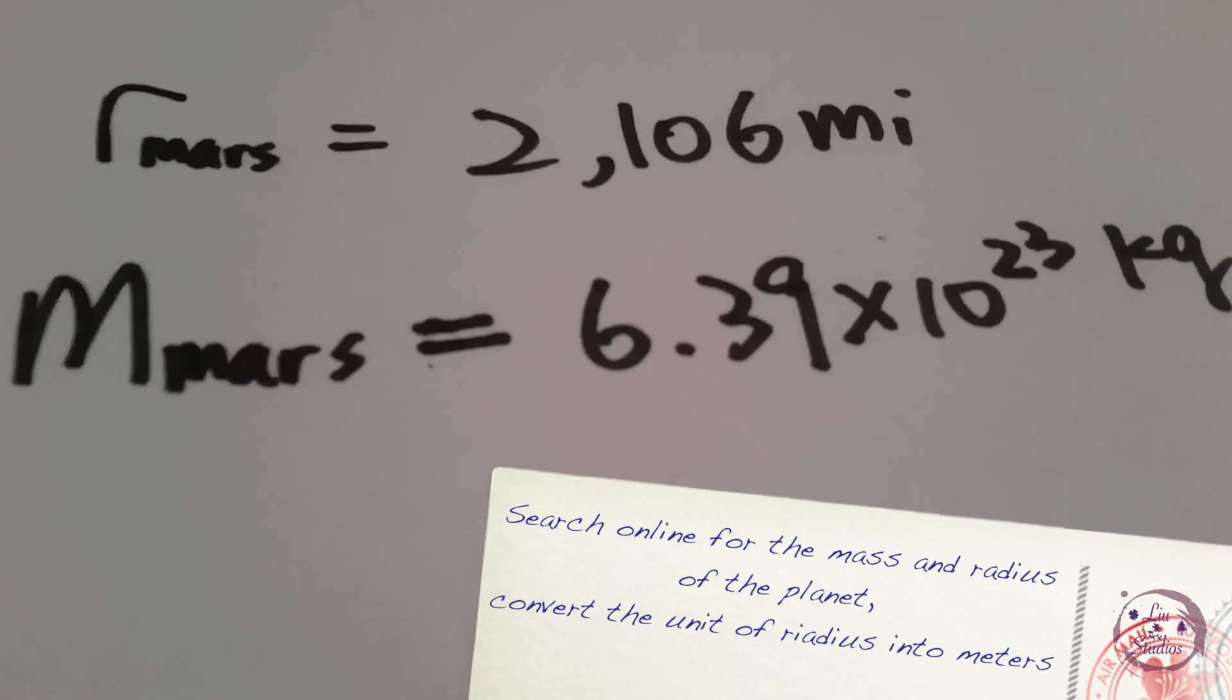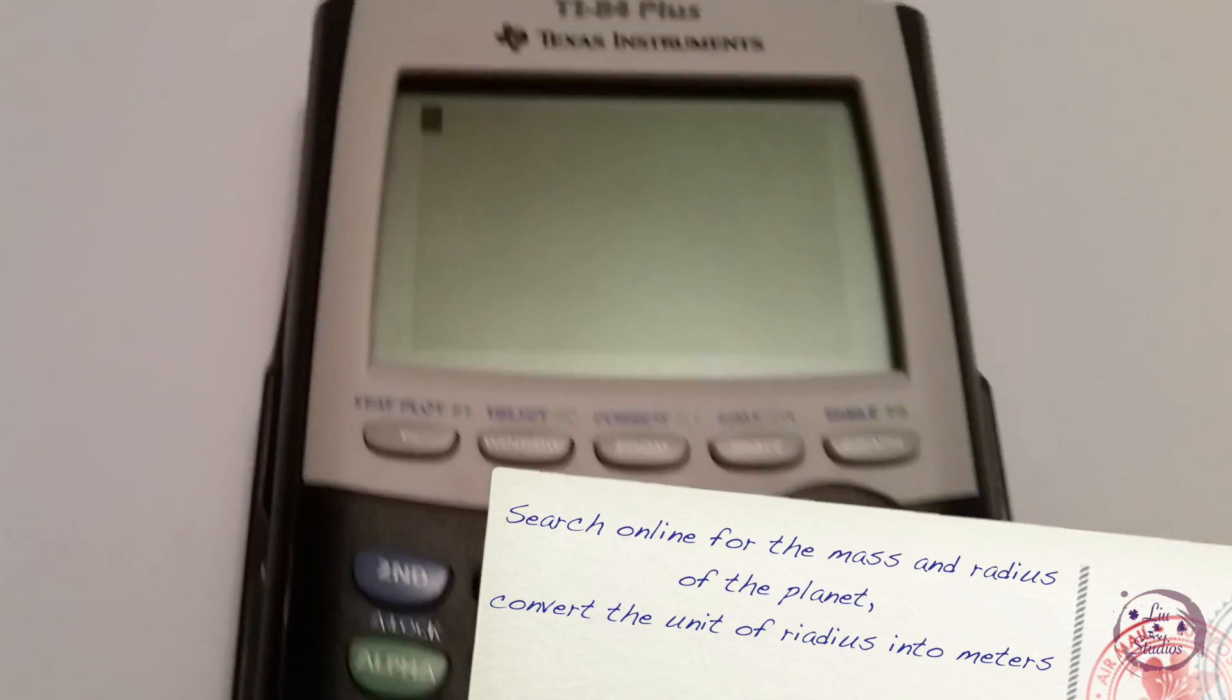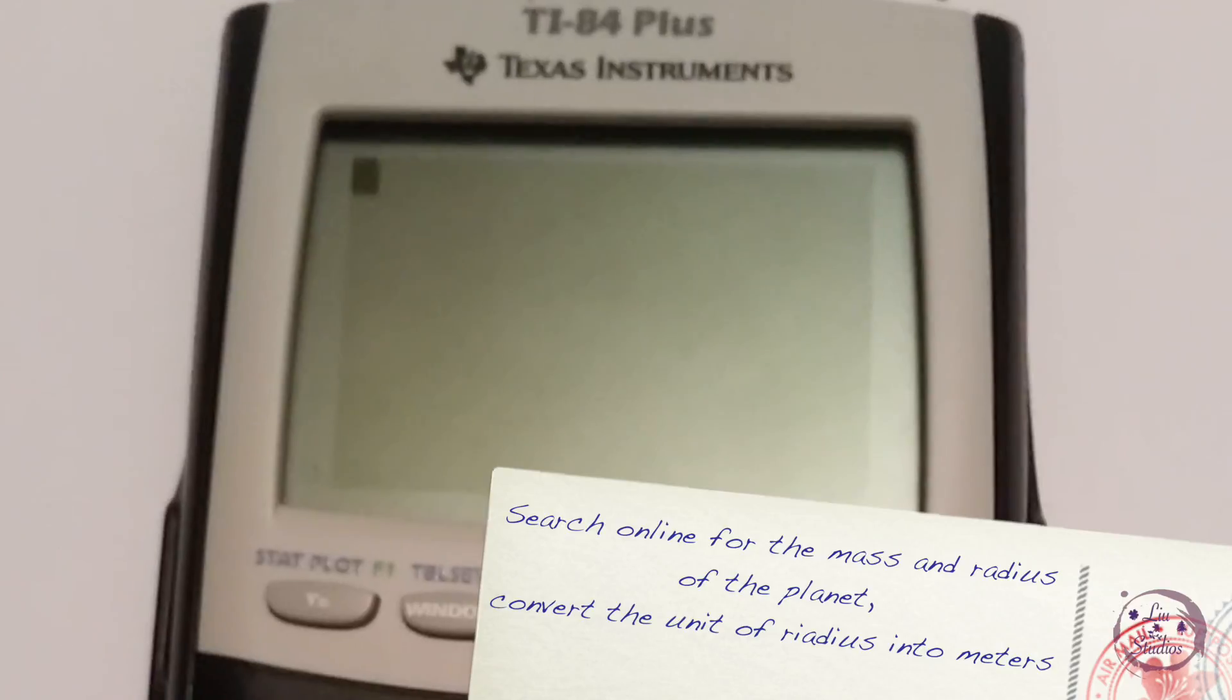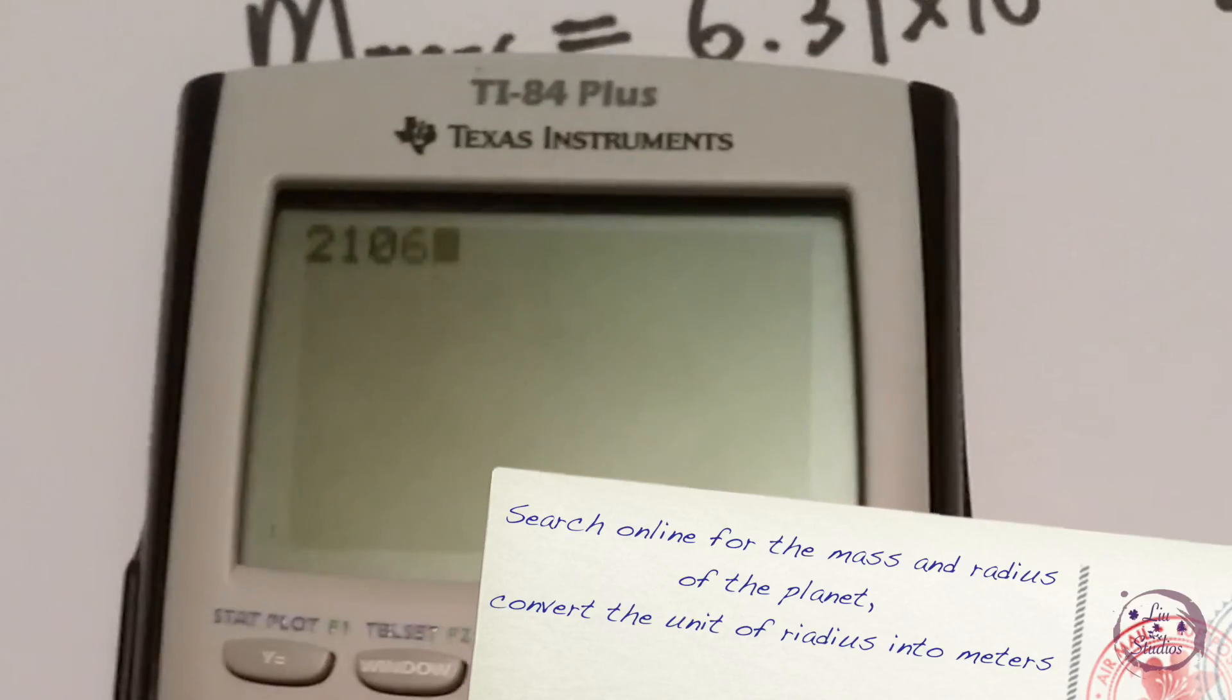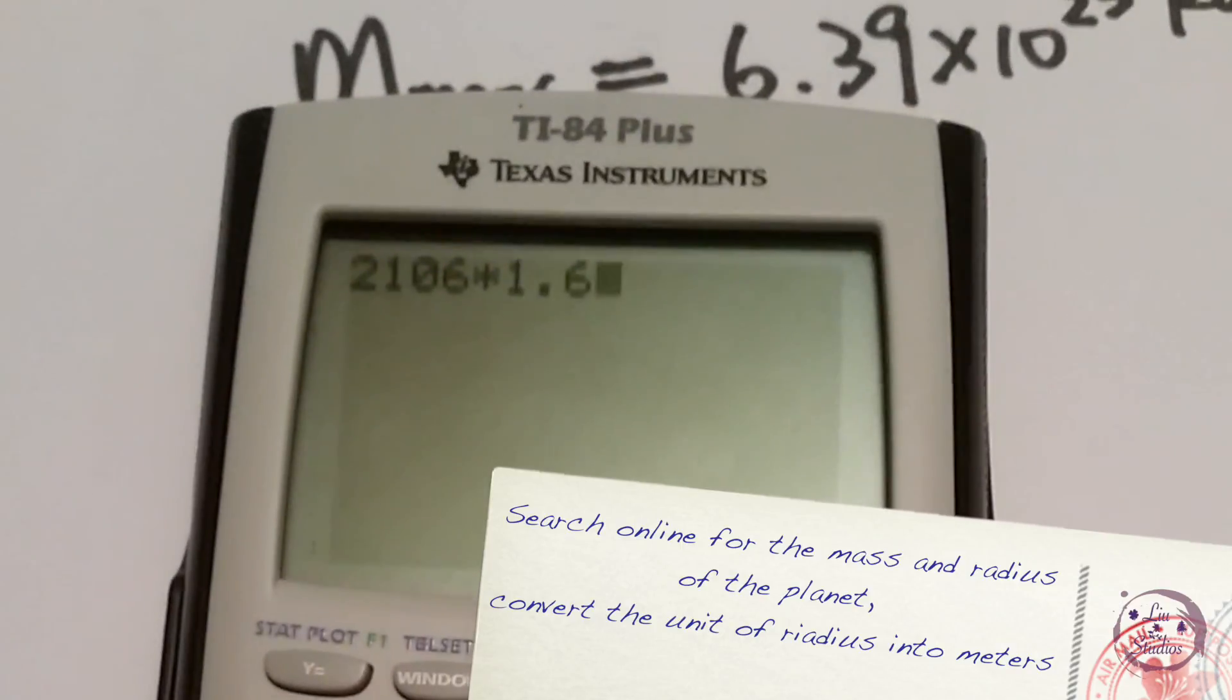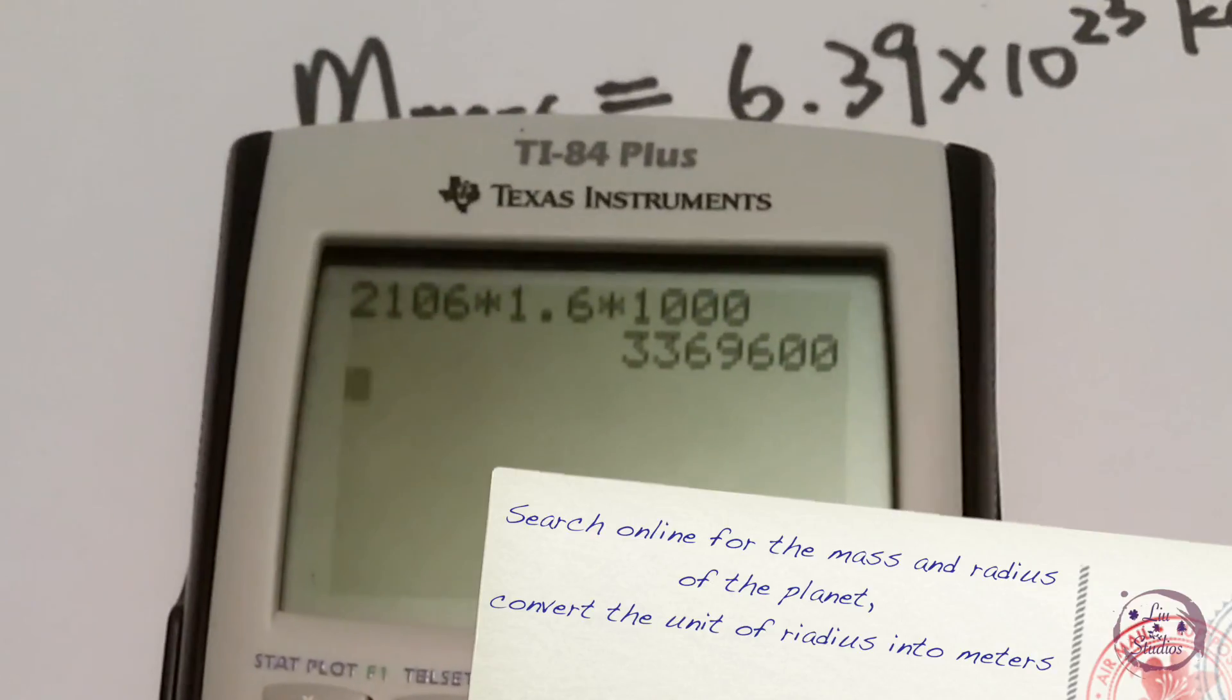Search for the mass and radius of the planet. When you search the basic information about the planet, you'll find that usually the radius is given in miles. To convert it into meters, multiply the number in miles by 1600. Then you get the radius of the planet in meters.